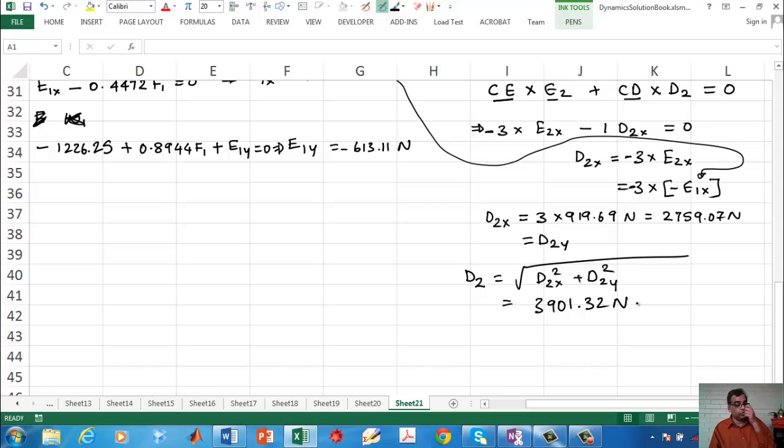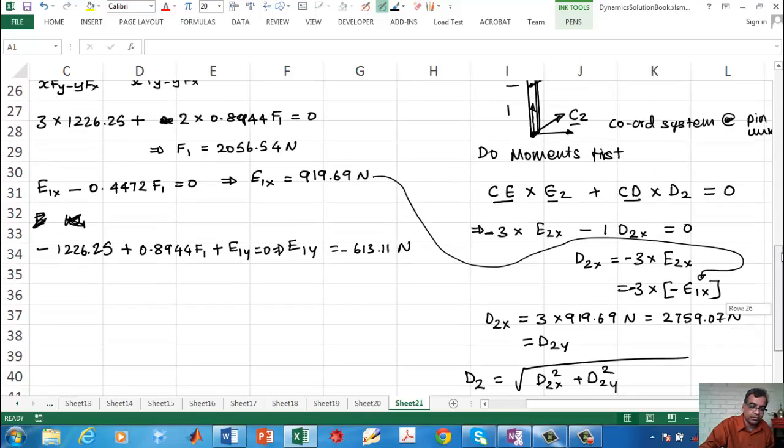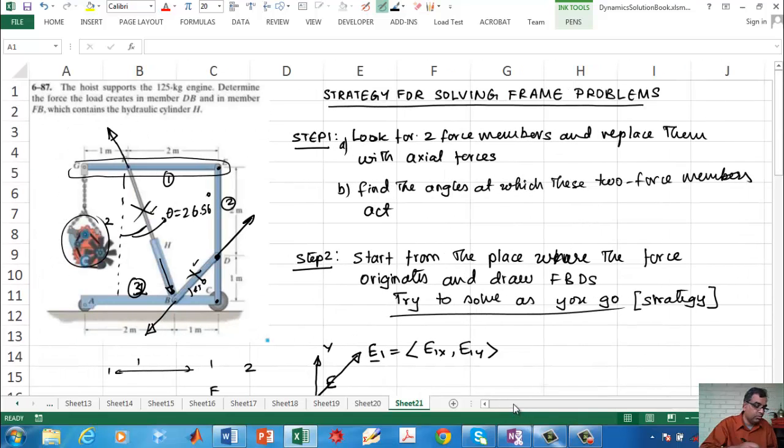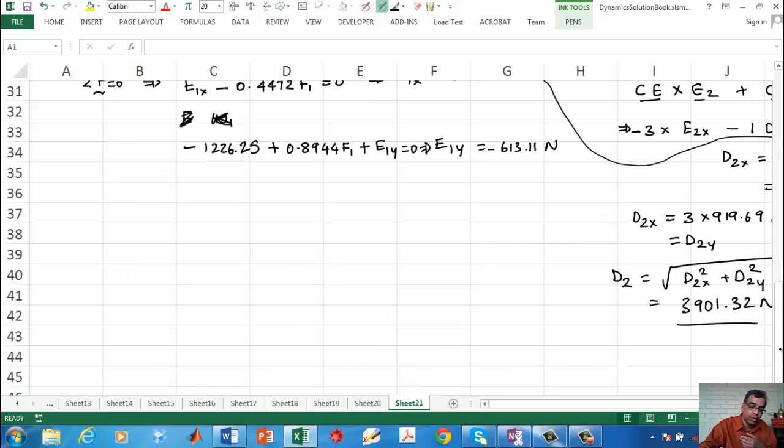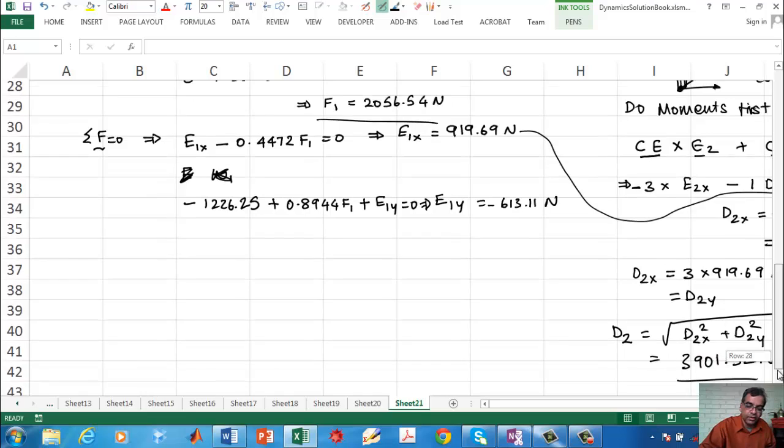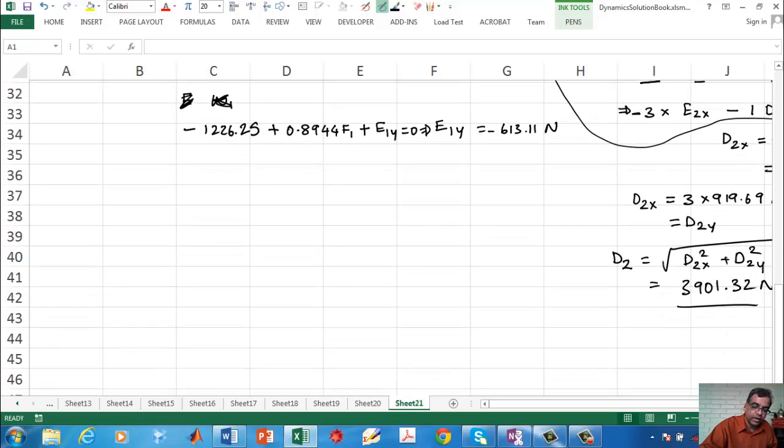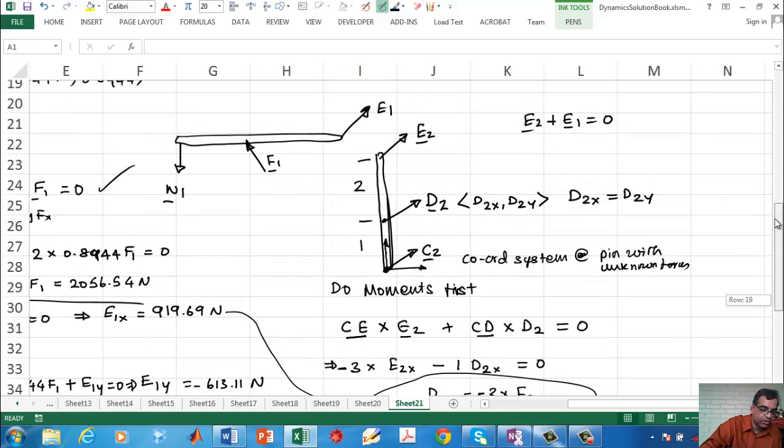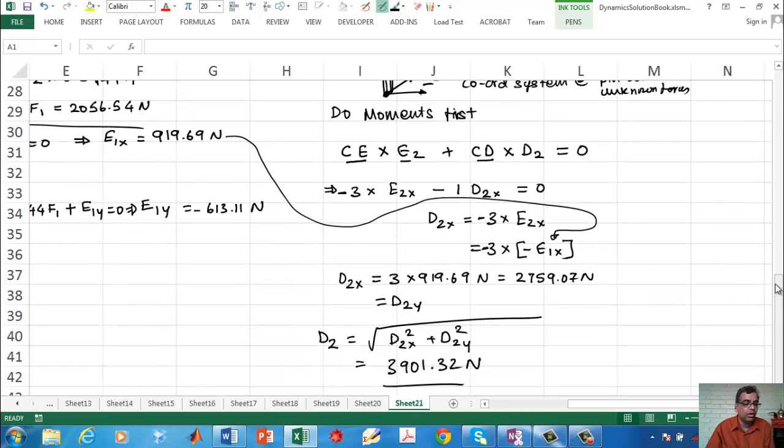And you can continue, but if you look at our problem statement, it says find the load created in these two things, and we found those two things. One of them was F1, 2056 newtons, and the other one was D2, 3901 newtons. You can continue and find the other ones if you like, but at this stage we are done. You can see how this process works. Once you get used to this process, things will be pretty simple. See you.